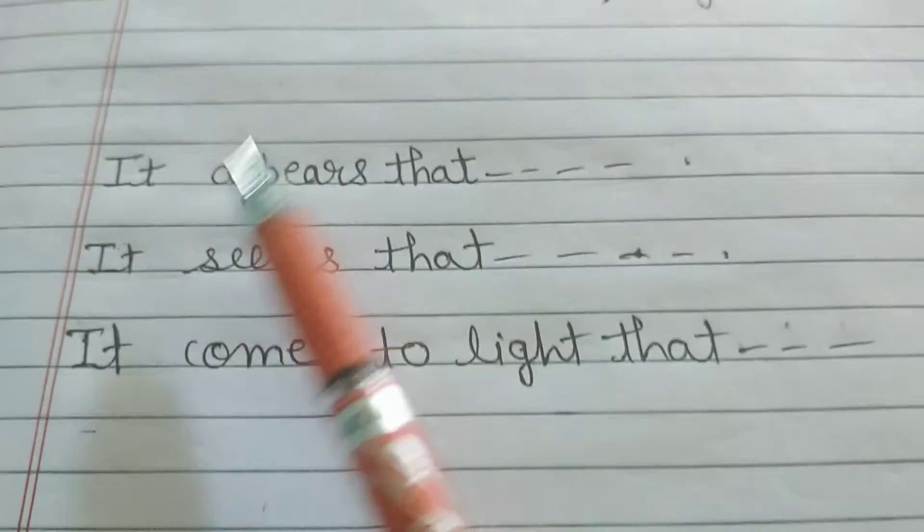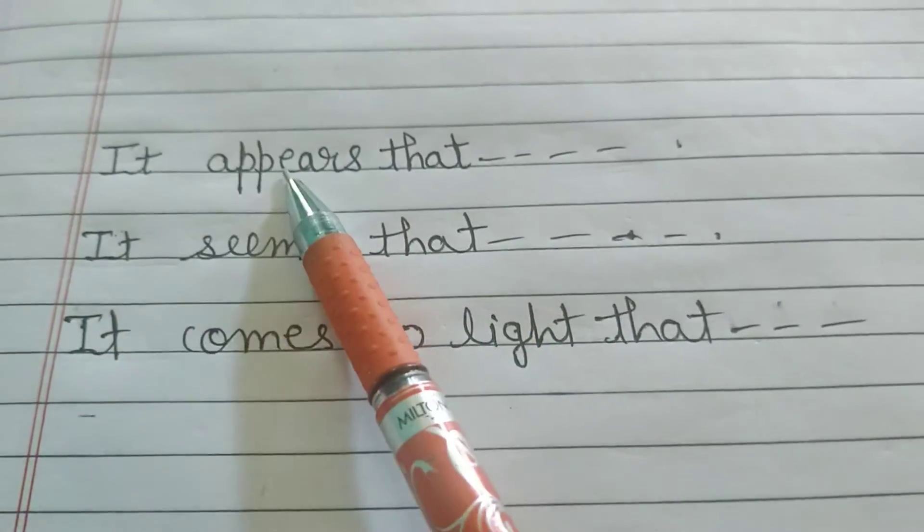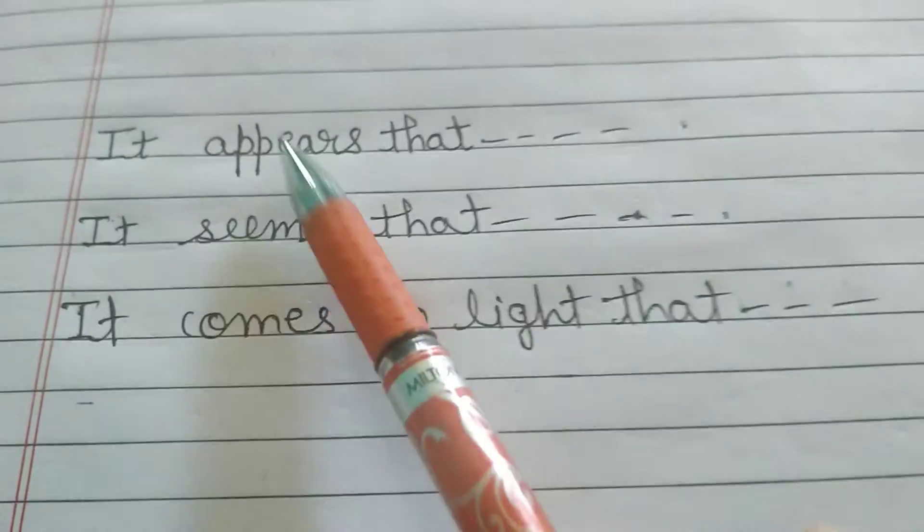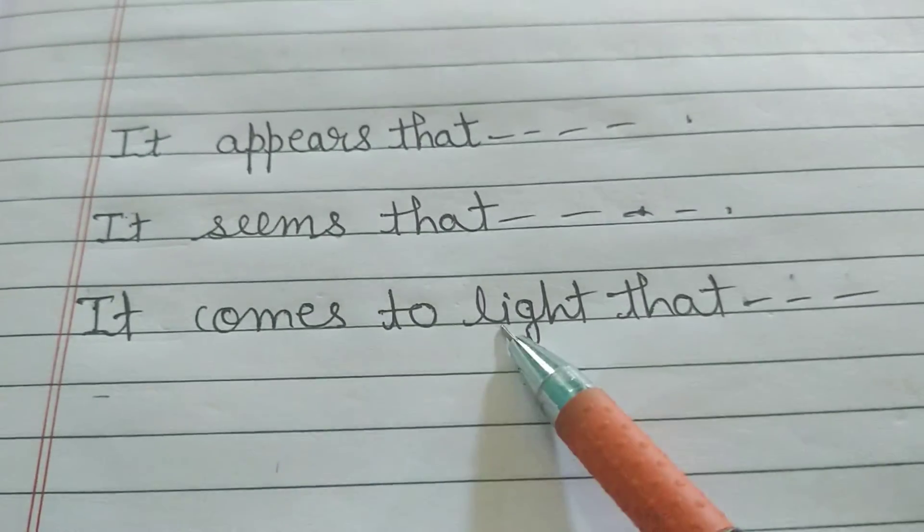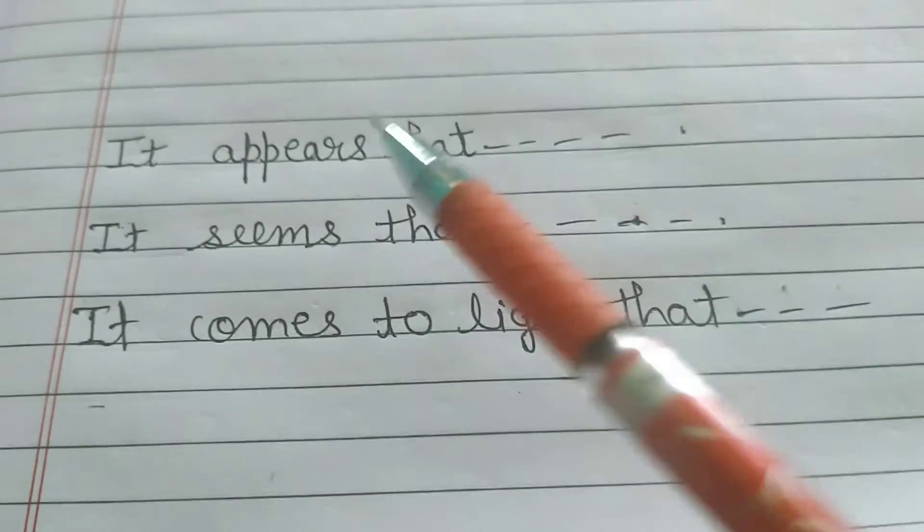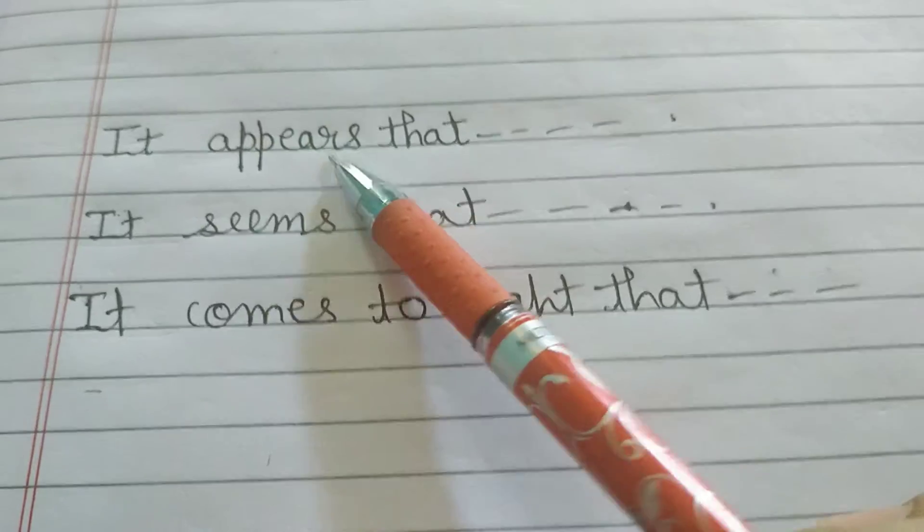Writing task 2. So in writing task 2, 'it appears that.' What type can we write? It can be written as 'it seems that' or 'it comes to light that.' What this means is we can write this phrase three ways.